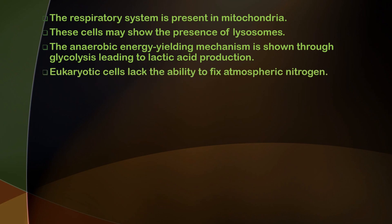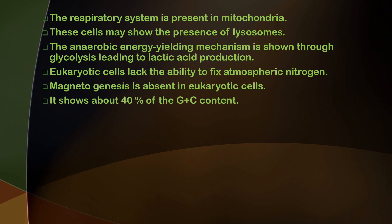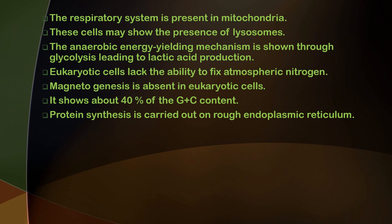The eukaryotic cell lacks the ability to fix atmospheric nitrogen; this ability is present in some prokaryotic cells. Magnetogenesis is absent in eukaryotic cells. It shows about 40 percent G+C content, and protein synthesis is carried out on the rough endoplasmic reticulum.